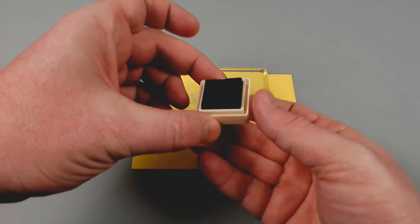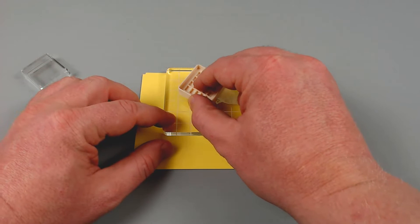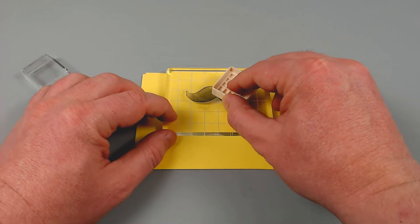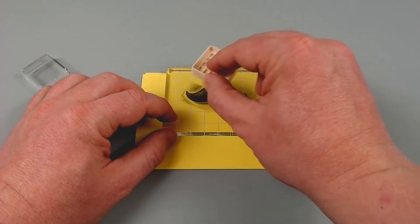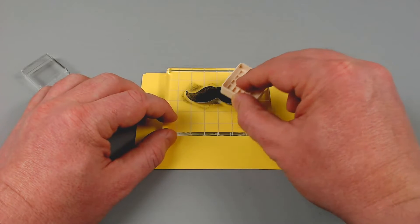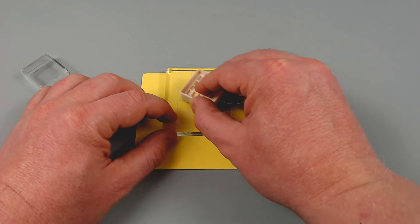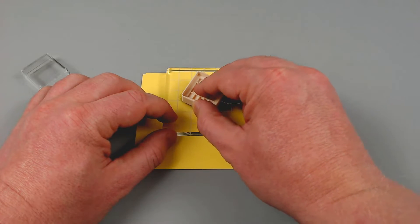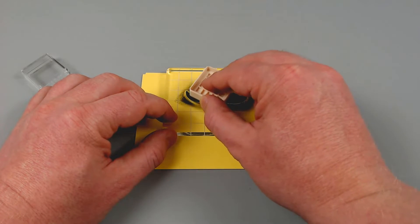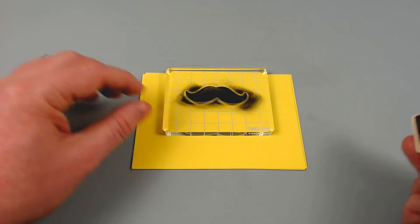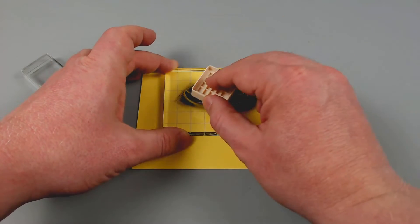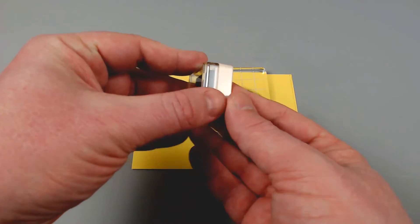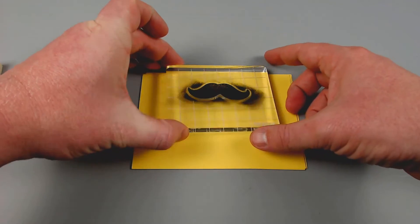You will then ink up the stamp. Finally, you would use the acrylic block to transfer that design onto your cardstock or whatever you are stamping onto.